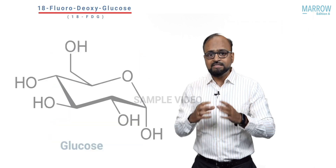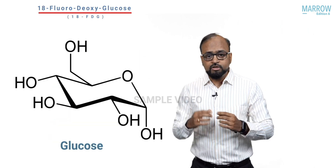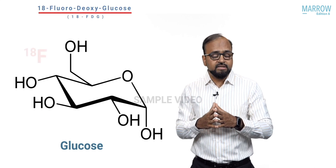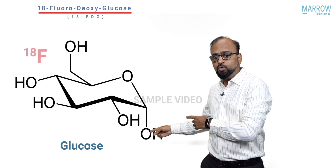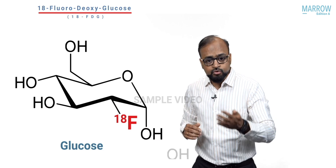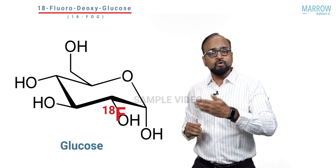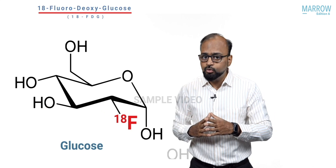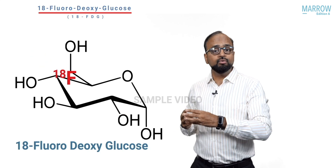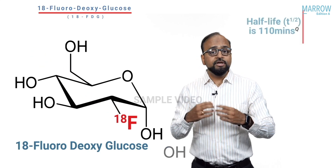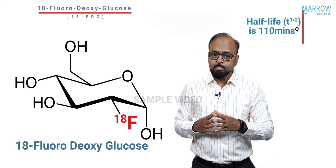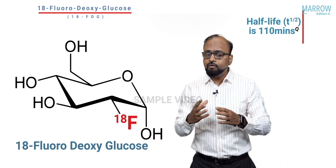Here is the basic simplified structure of glucose. The radionuclide used in PET scan is 18-F. What happens is that one hydroxyl group of glucose is replaced by this 18-fluorine, and that is how you get 18-fluorodeoxyglucose. So remember, it is actually a radioactive form of glucose. The half-life of 18-FDG is around 110 minutes.